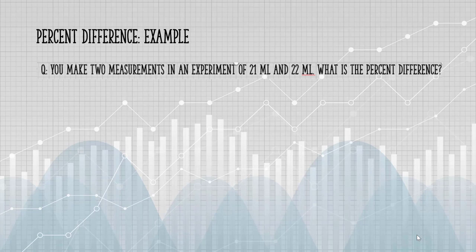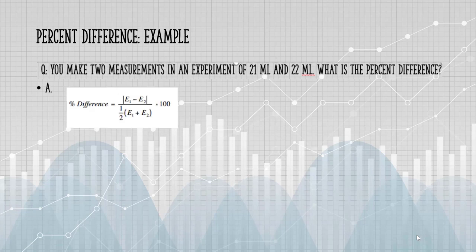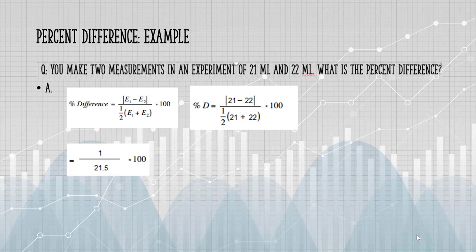Let's take a look at an example. You make two measurements in an experiment. What is the percent difference? We're going to plug those numbers into the formula. So we end up with 1 over 21.5, so the percent difference is 4.65%.